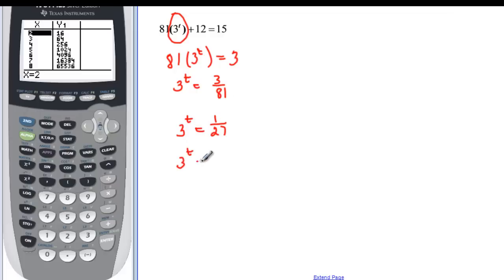3 to the t is then the same thing as 3 to the negative 3. That would be 1 over 27. And my exponents are the same since my bases are the same. So t equal to negative 3.